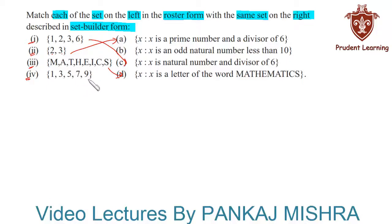9. We know that these are odd natural numbers that are less than 10, so it will match with B. So here we have: 1 matches with C, 2 matches with A, 3 matches with D, and 4 matches with B.